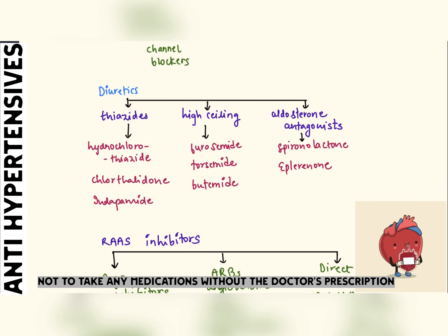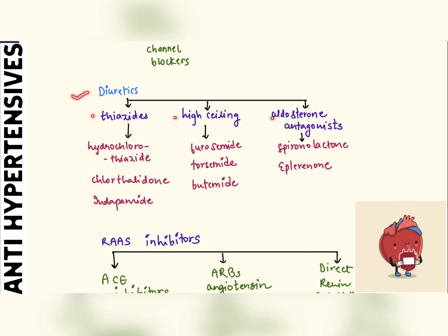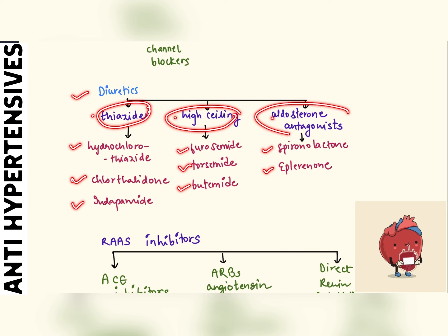In diuretics, we have thiazides, high ceiling, and aldosterone antagonists. Hydrochlorothiazide, chlorthalidone, and indapamide are in thiazides. Furosemide, torsemide, and bumetanide are in high ceiling. Spironolactone and eplerenone are in aldosterone antagonists.